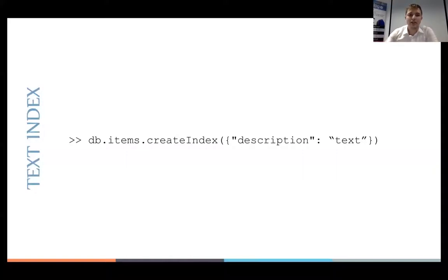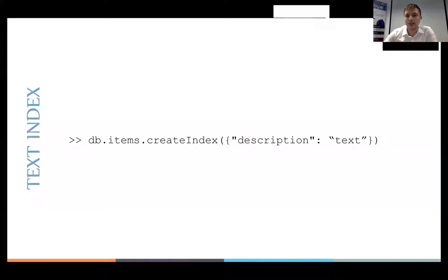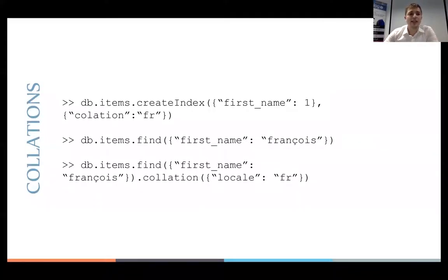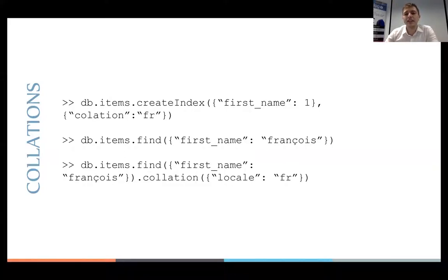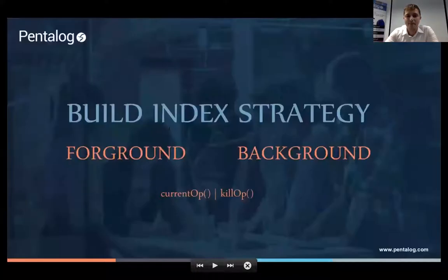MongoDB also supports a text index — a full-text index. You can indicate which language the text should be indexed in. For example, if a user is from France, text is indexed in French, so searching for 'François' with special characters, or German umlauts, or Romanian diacritics — MongoDB will return the right information because the index duplicates data accounting for language-specific character normalization.